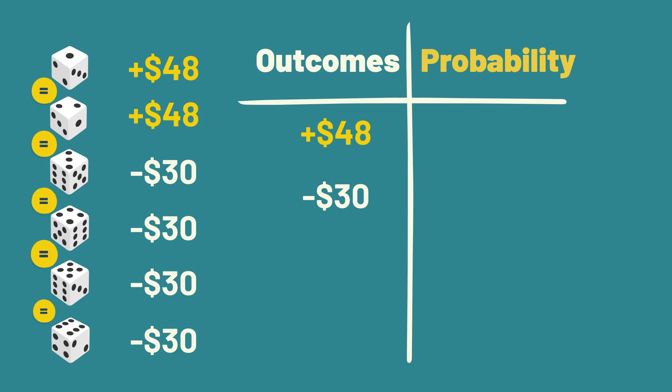Because all rolls of the die are equally likely, we can add up the payouts for each scenario and divide by 6. In other words, the probability of getting $48 is 2 out of 6, and the probability of losing $30 is 4 out of 6. 48 times 2 sixths is 16,